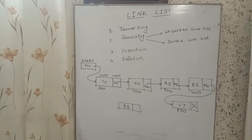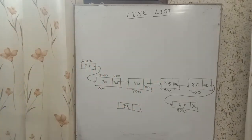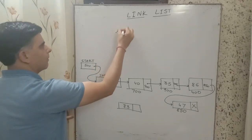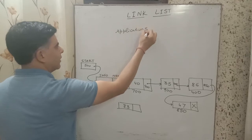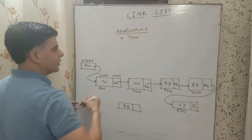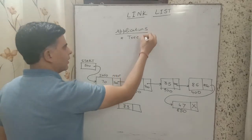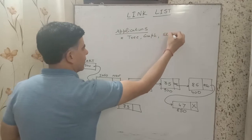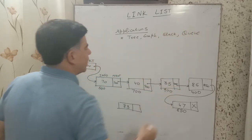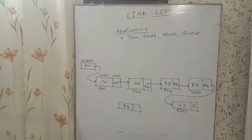Linked list is a very important data structure. Complex data structures such as trees, graphs, stacks, and queues all use the concept of linked list in their implementation. Even though graph is a non-linear data structure, its implementation uses linked list concepts. Stacks and queues can be maintained with the help of arrays as well as with the help of linked lists.